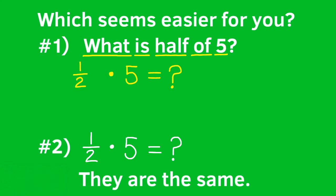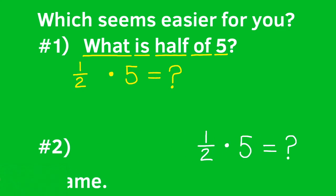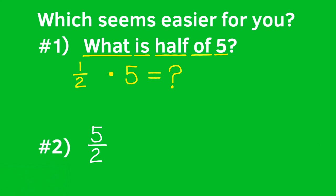Half times five is the same as half of five. One way we can find half of five is by writing it like this: five over two, which means five divided by two. Sometimes you see it written like this: five divided by two.